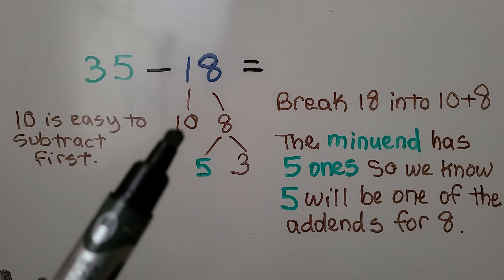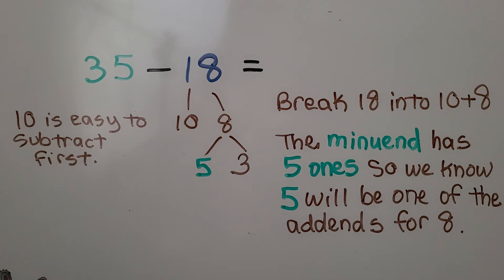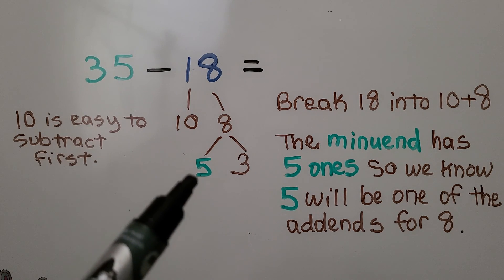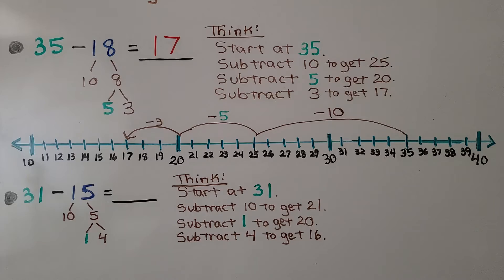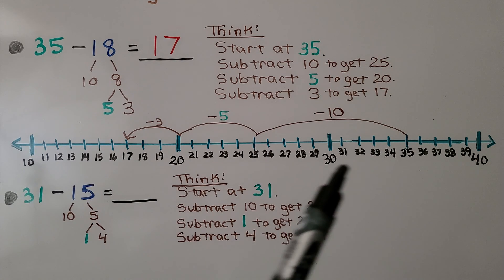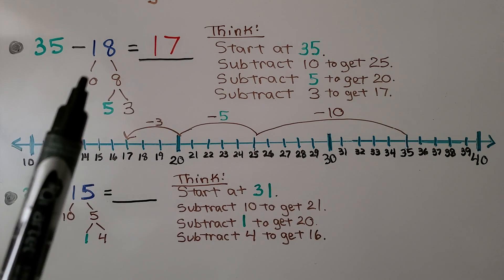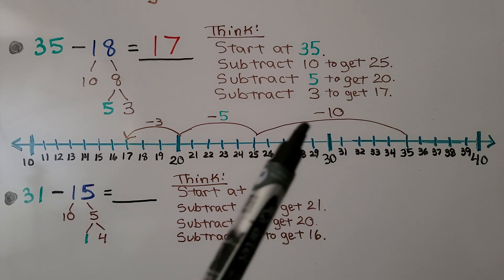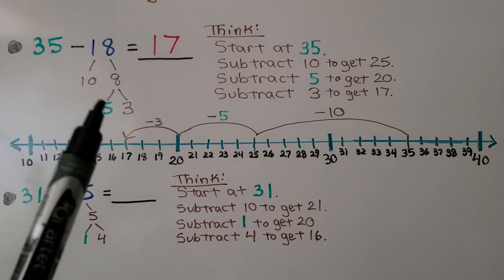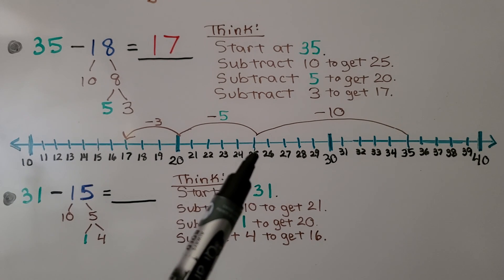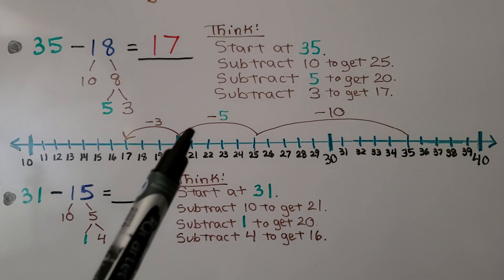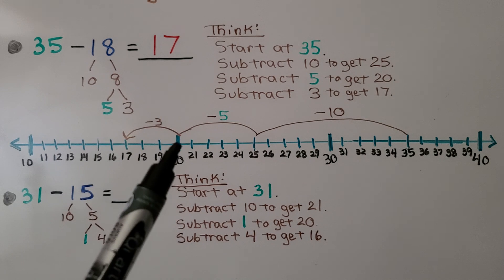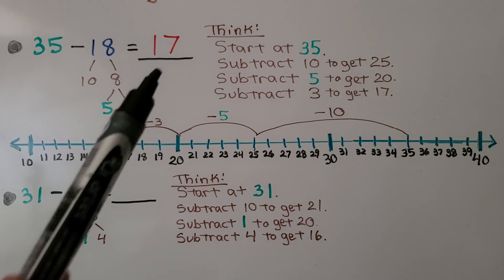We break the subtrahend 18 into a 10 and an 8, because 10 is easy to subtract first. The minuend has five 1s, so we know 5 will be one of the add-ins for 8. If we use a number line, we can see what we should be thinking. We start at 35 and take away that 10 to get to 25. The 8 is broken into a 5 and a 3. Now at 25, we go to 20 by taking that 5 away, then subtract the 3 to go from 20 to 17. The difference is 17.